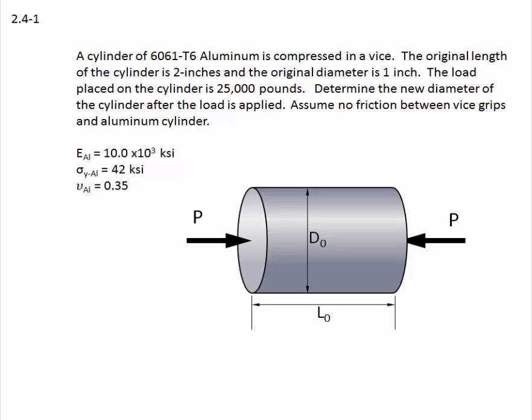The load placed on the cylinder is 25,000 pounds. Determine the new diameter of the cylinder after the load is applied. Assume no friction between vise grips and aluminum cylinder. And some properties are given, including the modulus of elasticity of aluminum, the yield stress of the aluminum, and Poisson's ratio for the aluminum.